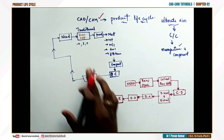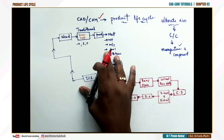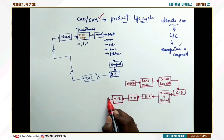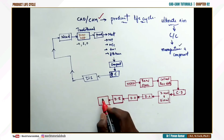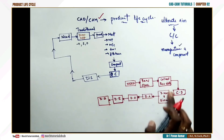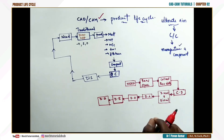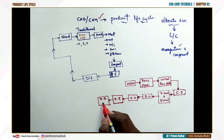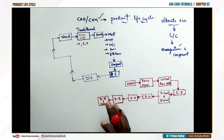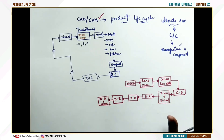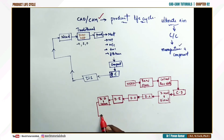An important point here: unlike the traditional way, where documentation was difficult and couldn't be preserved, in the CAD/CAM system complete design documentation and communication can be done easily. Every single step and every single work performed for the project can be documented. This documentation then communicates all the information to the manufacturing engineer.